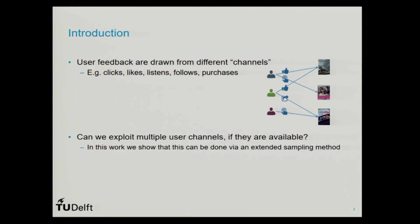The main motivation behind this work is the fact that in recommender systems, user feedback can be collected through different channels. Users can click on an item, purchase an item, like it, share it, and do all these different sorts of interactions. The question is whether we can exploit these user channels in order to improve the performance of recommender systems.